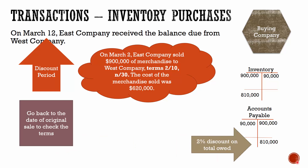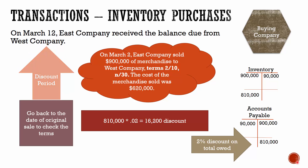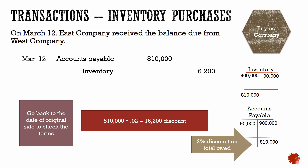The discount is applied to the amount that is owed. Right now we only owe $810,000, so that results in a $16,200 discount that West Company receives for paying within those 10 days. The journal entry recorded on March 12th is a debit to accounts payable for the full $810,000, because we're paying off the entire bill. We reduce our inventory by the $16,200 discount amount, and the cash paid is the total amount owed less the discount, which comes out to $793,800.